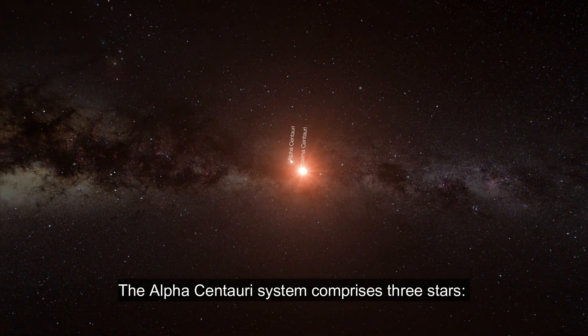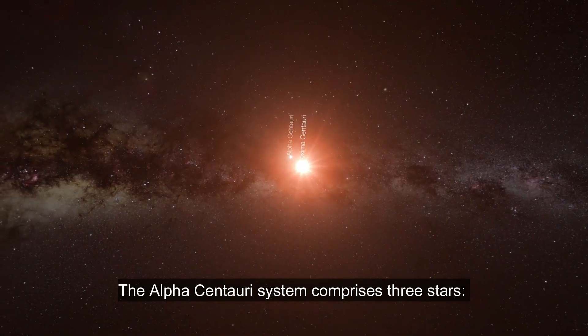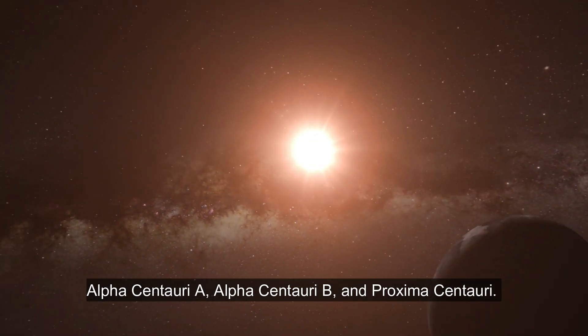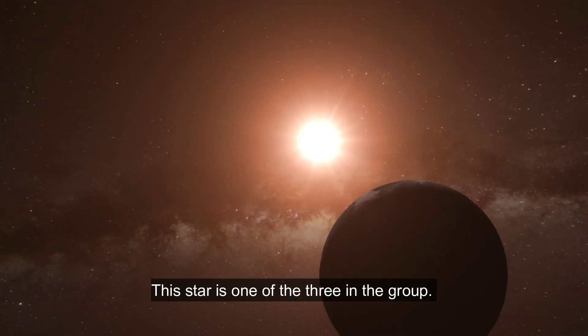The Alpha Centauri system comprises three stars: Alpha Centauri A, Alpha Centauri B, and Proxima Centauri. This star is one of the three in the group.